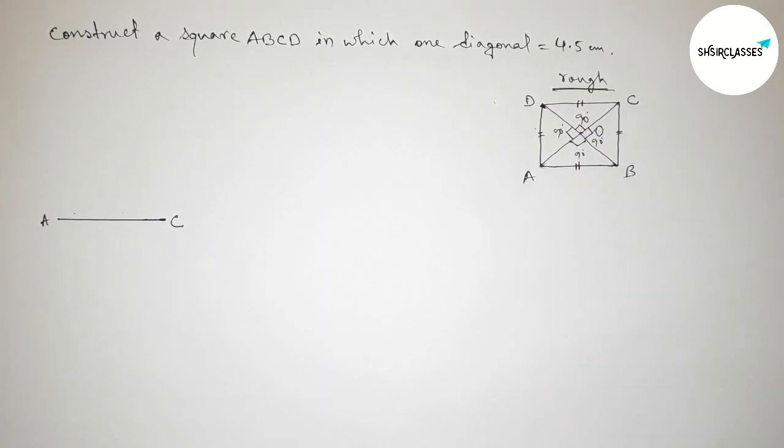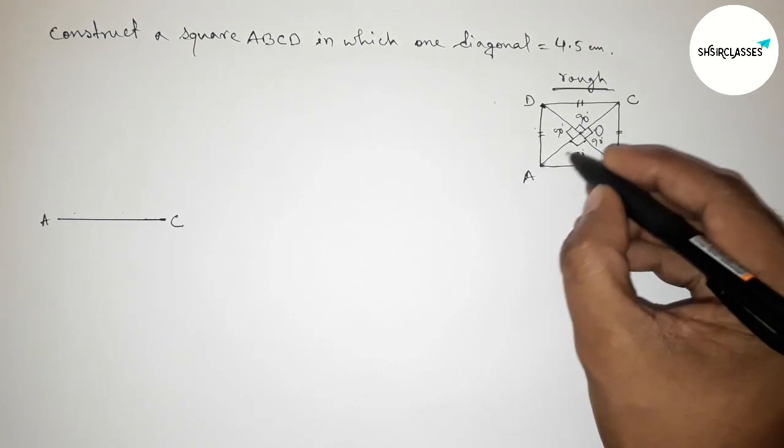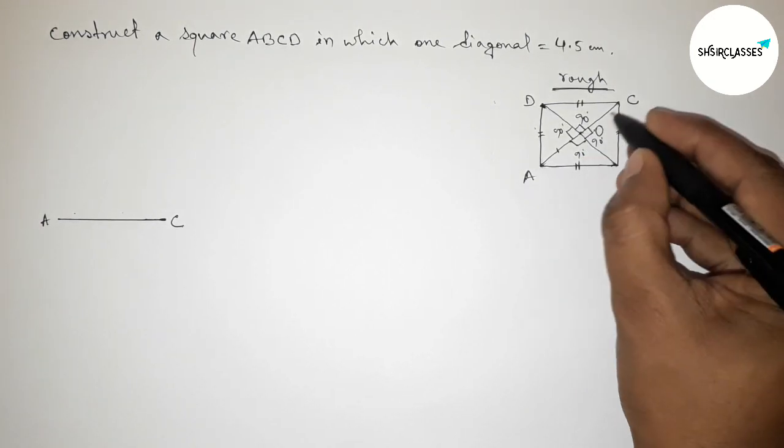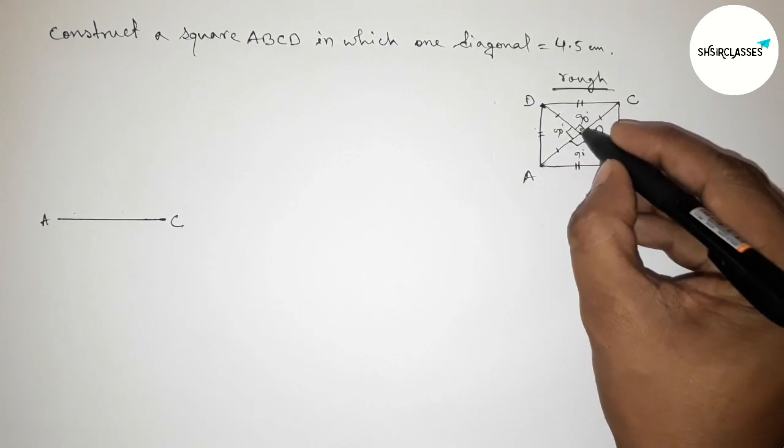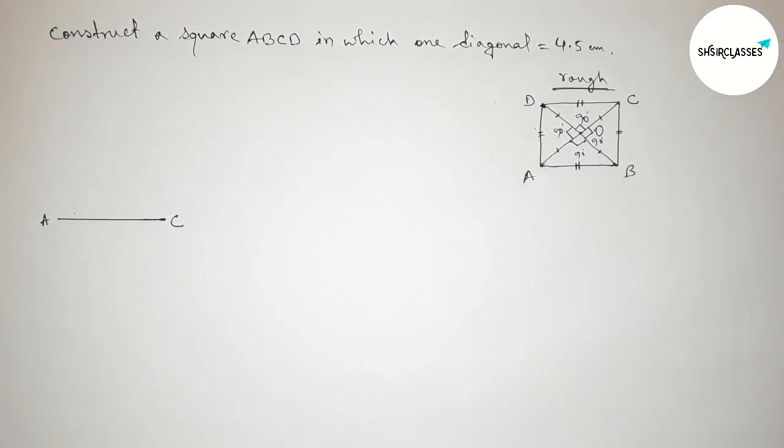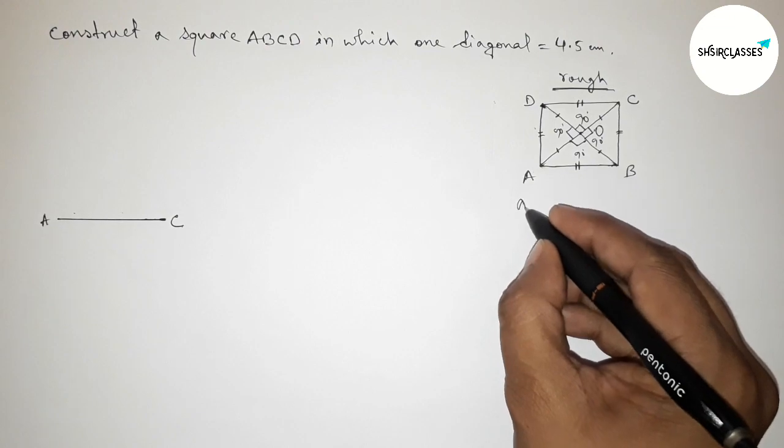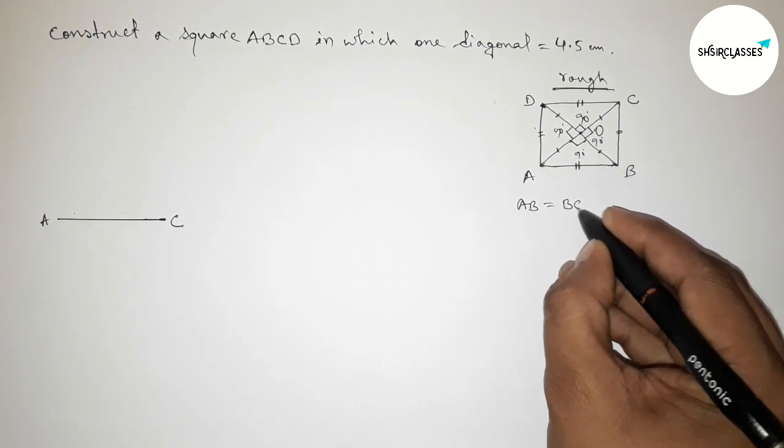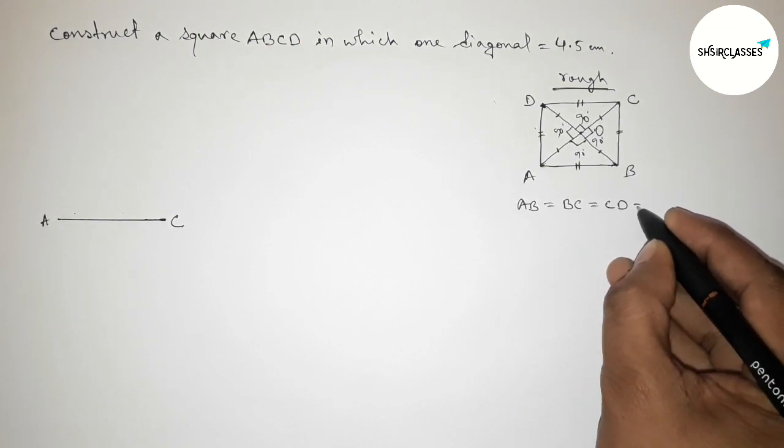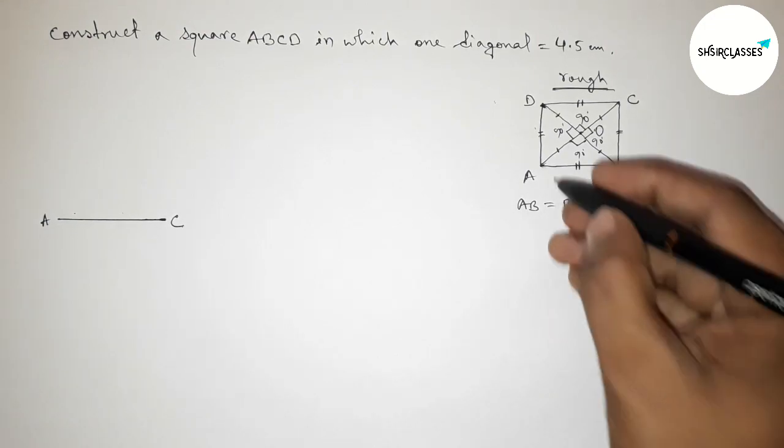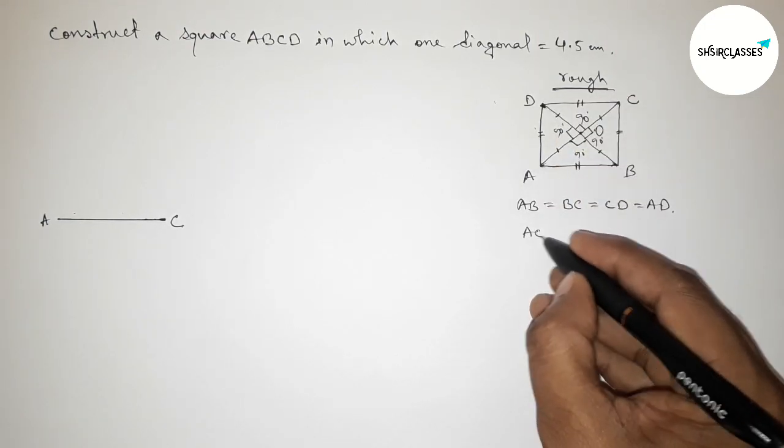And also the length OA and OC equal and OD and OB equal. So first all the sides are equal here. All the sides of this square equal and also we can say that the two diagonals are equal.